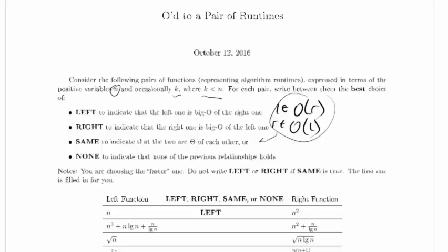You're choosing the faster one. Do not write LEFT or RIGHT if SAME is true. Anytime SAME is true, LEFT and RIGHT are both true, but that's not the best choice. SAME is the best choice in that case.